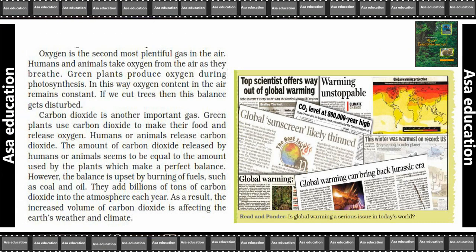Oxygen is the second most plentiful gas in the air. Ab oxygen jo hai, sab se zyada matra mein paai jane wali doosri gas hai air ke andar. Humans and animals take oxygen from the air as they breathe. Hum aur jaanwar donon jo hain oxygen ko andar lete hain. Green plants produce oxygen during photosynthesis. Jab bhi photosynthesis hota hai, us time pe jo green plants hain woh oxygen produce karti hain.